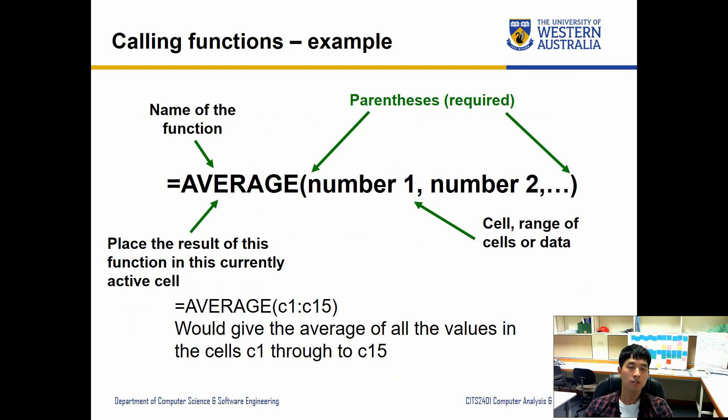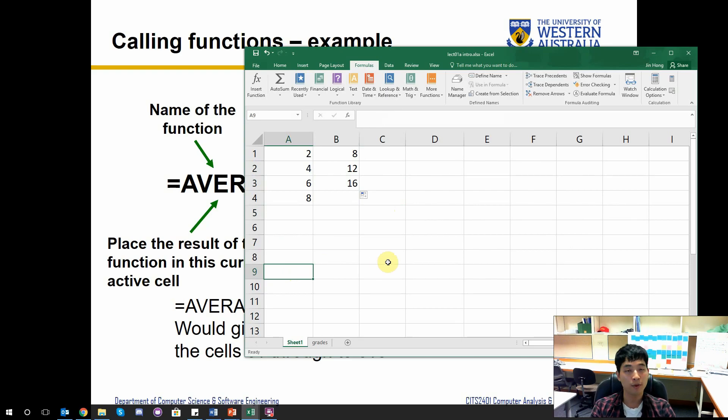So AVERAGE is a good example. Average is the name of the function, places the result of this function in this currently active cell. For instance, AVERAGE C1 to C15 will give an average value of C1 through C15. So let's try this. Instead, we're going to try with A1 to A4. So start with equal sign, AVERAGE. So it only shows you AVERAGE is highlighted, which is the best match, and it gives you a brief description of what the average is. So it says returns the average of its arguments, which can be numbers or names, arrays or references that contain numbers.